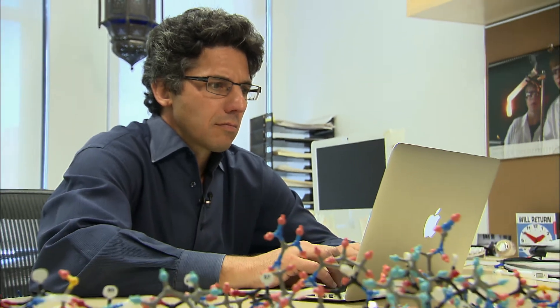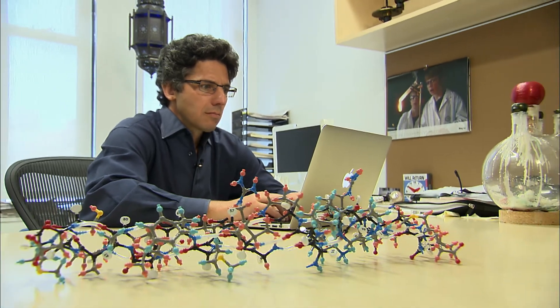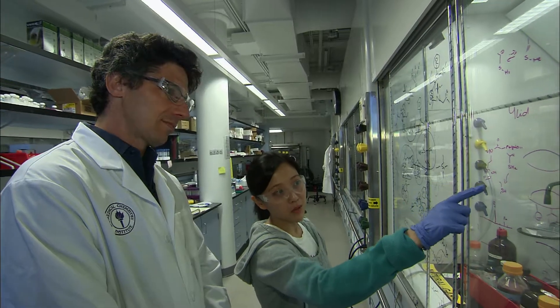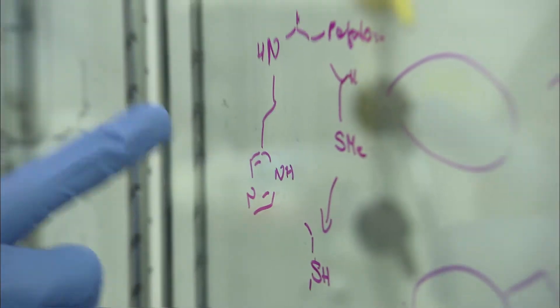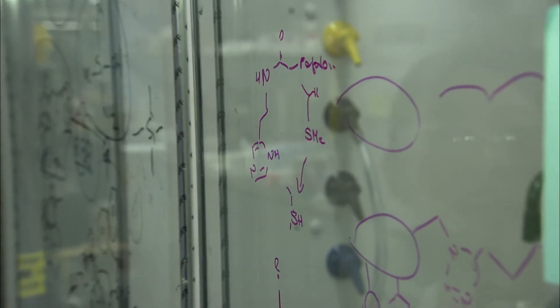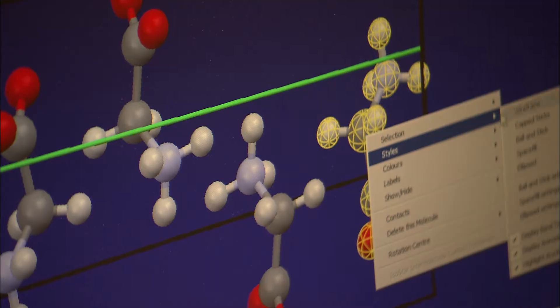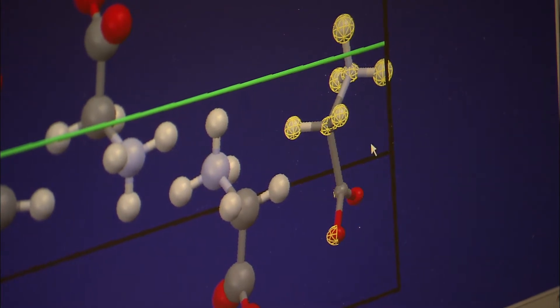Kirshenbaum is a bio-organic chemist who is funded by the National Science Foundation. He and his team are engineering new molecules that are modeled after ones found in nature. These new synthetic man-made molecules are called peptoids.